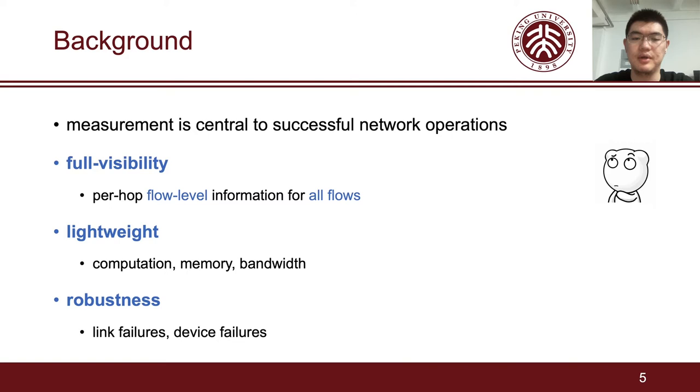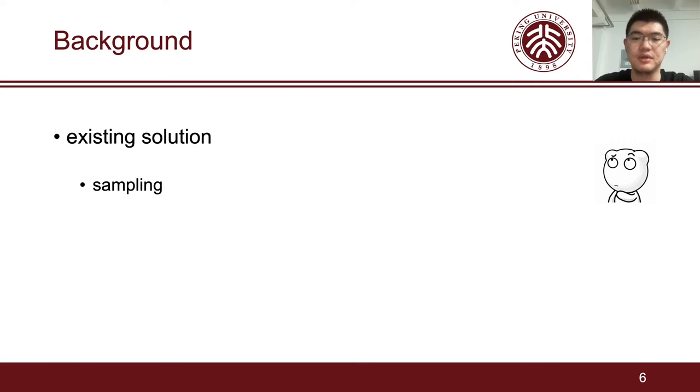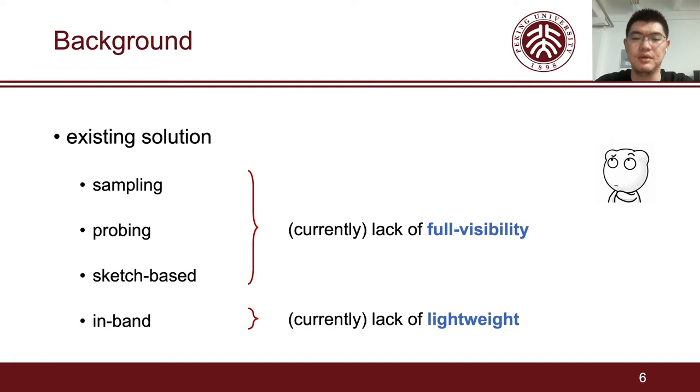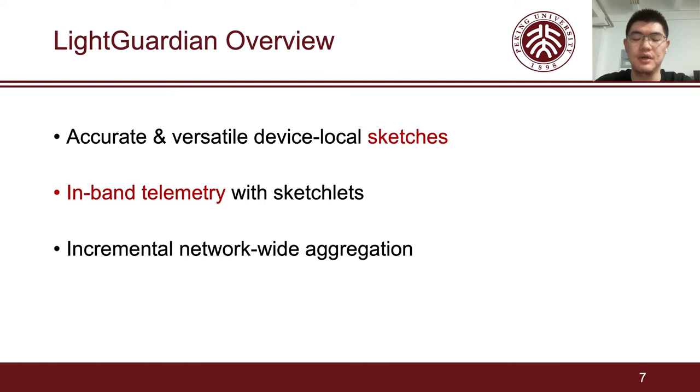Traditional measurement solutions can be divided into three categories: sampling solutions, probing solutions, and sketch-based solutions. However, these solutions focus on partial flows or flows on a single device, and thus lack full visibility. The emerging in-band telemetry solutions insert INT information into each packet, which breeds a great burden on bandwidth. Therefore, no existing work can achieve full visibility without considerable performance overhead.